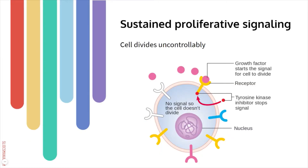The first hallmark is sustained proliferative signaling. This is the idea that a cancer cell divides uncontrollably in the sense that it's not reliant on signaling molecules to tell it to grow. Cell division in itself is not a bad thing — as we're growing or healing a wound, those things require cell division. But normal healthy cells need growth signals in order to divide.